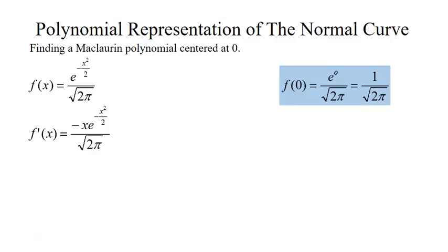Now we have to find our first derivative. Our only variable is the x in the exponent, so we get negative x times e to the negative x squared over 2, divided by the square root of 2 pi. And if we evaluate that at 0 we get 0.